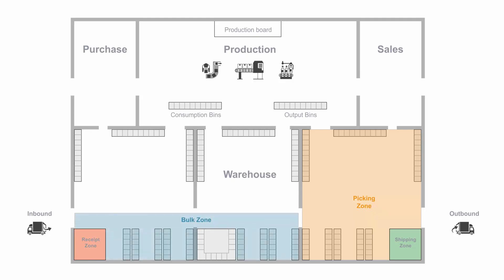Then I could create a bulk zone for items that I want to store away and to fulfill from the bulk zone into the picking zone, or the next one which I have called my warehouse zone — my high-running zone for picking into my production area, containing my raw materials and semi-finished products.